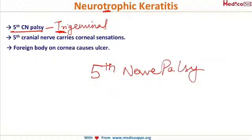In neurotrophic keratitis, corneal sensation is lost. The patient cannot feel anything — even if there is a foreign body on the cornea, they do not realize it is present. The foreign body remains on the cornea for a very long duration, ultimately resulting in a corneal ulcer.